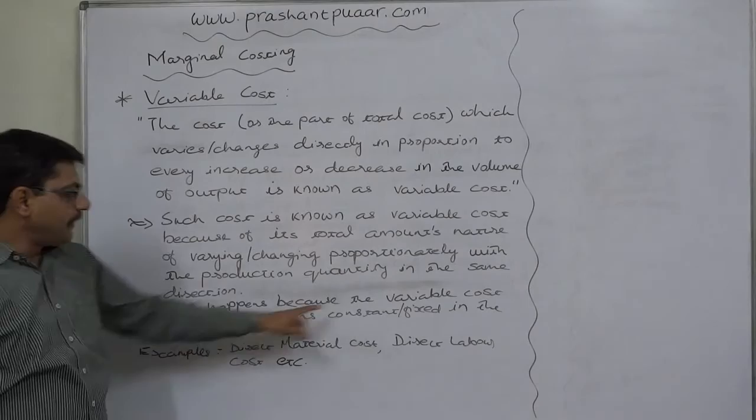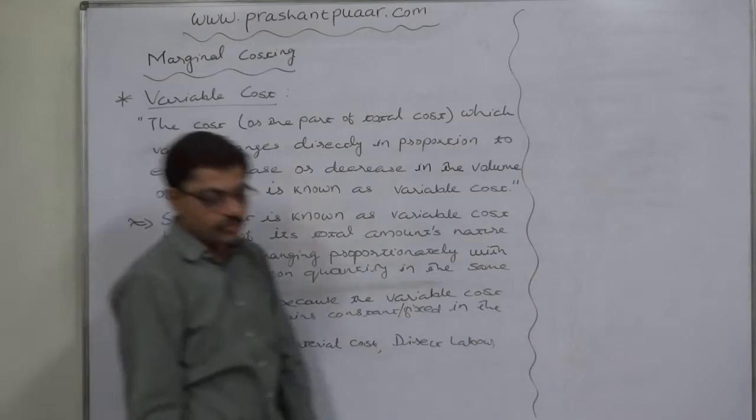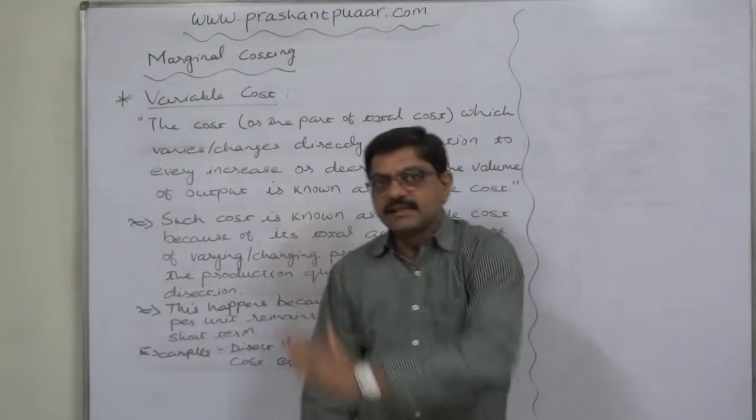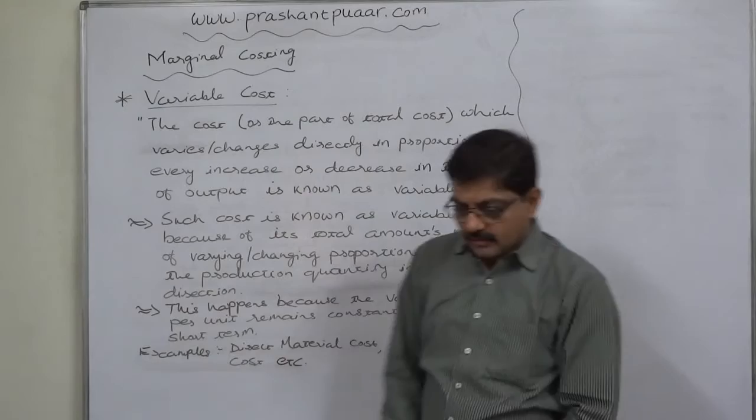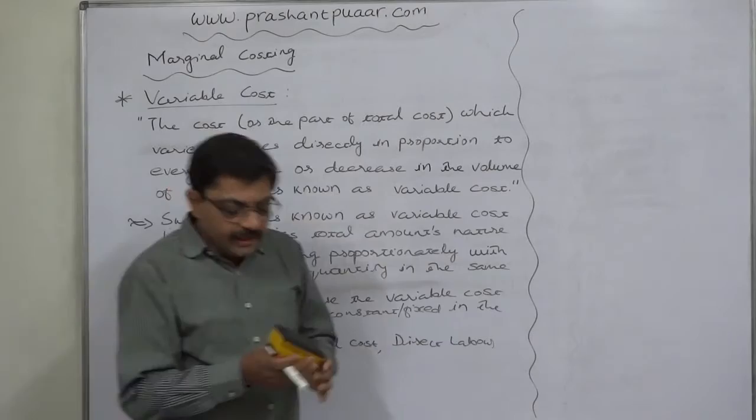The reason behind this behavior is that the variable cost per unit remains constant or fixed in the short term. The items which can be classified as variable cost — the per unit amount of such items of cost — remain constant within the short term. For example, direct material cost. Let us take this duster as a product.